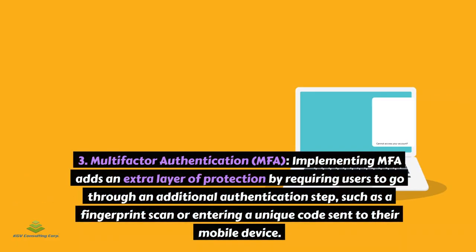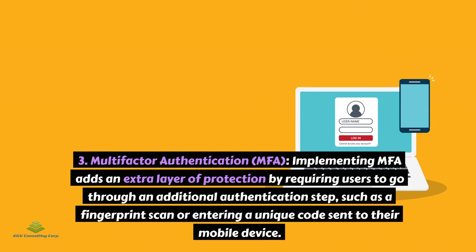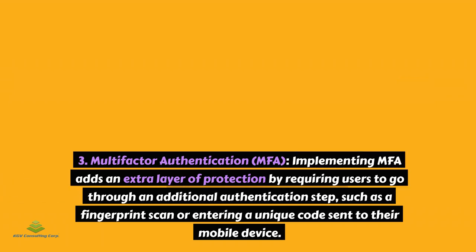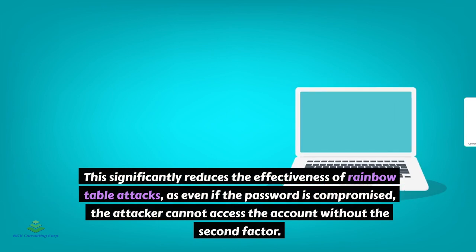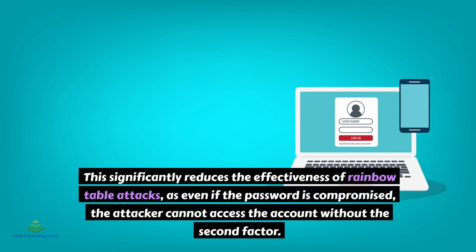The third strategy is multi-factor authentication (MFA). Implementing MFA adds an extra layer of protection by requiring users to go through an additional authentication step, such as a fingerprint scan or entering a unique code sent to their mobile device. This significantly reduces the effectiveness of rainbow table attacks, as even if the password is compromised, the attacker cannot access the account without the second factor.